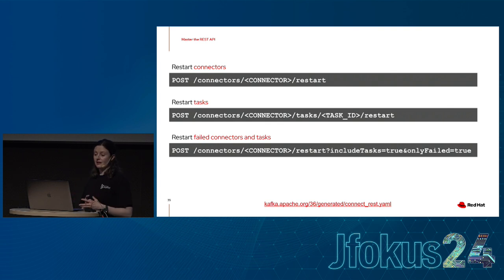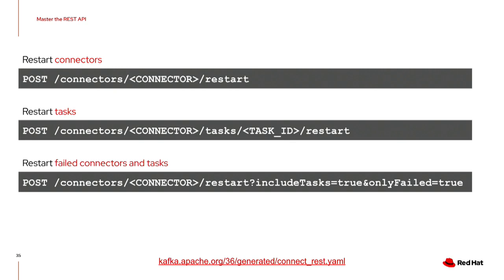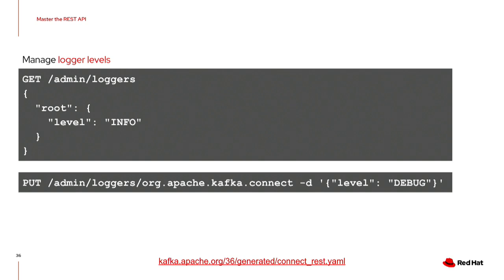For restarting, you can restart a specific connector or a specific task, but the most useful endpoint allows you to restart both tasks and connectors only if they've failed. The logging endpoint under admin/loggers is also very useful — it lets you see and update the logging levels of the Connect runtime without restarting any workers. You can add a new appender and say you want Connect to be at debug level, for example.